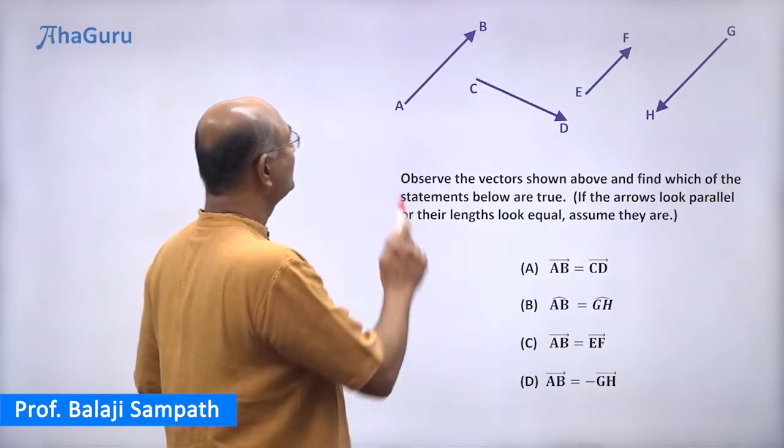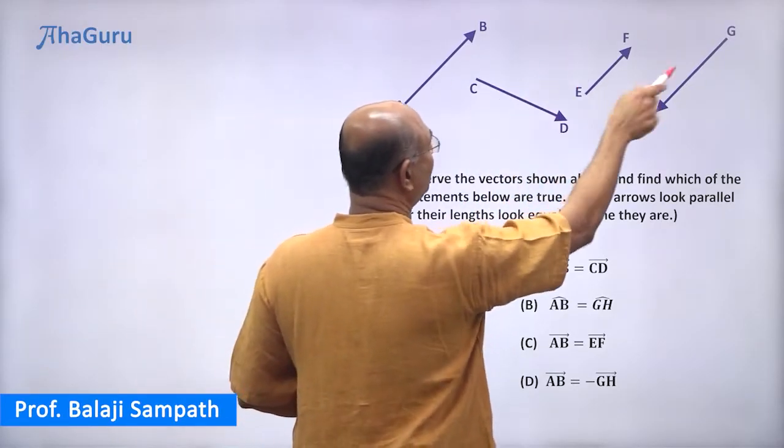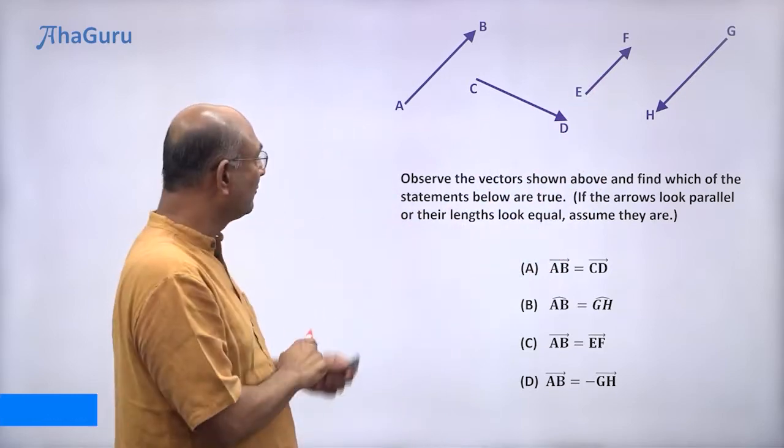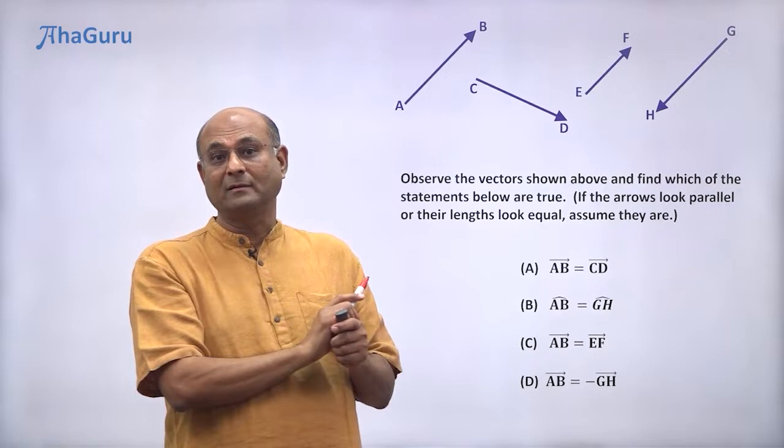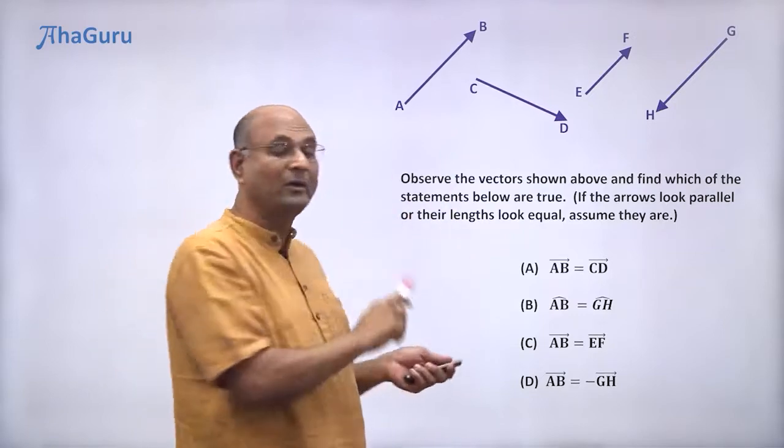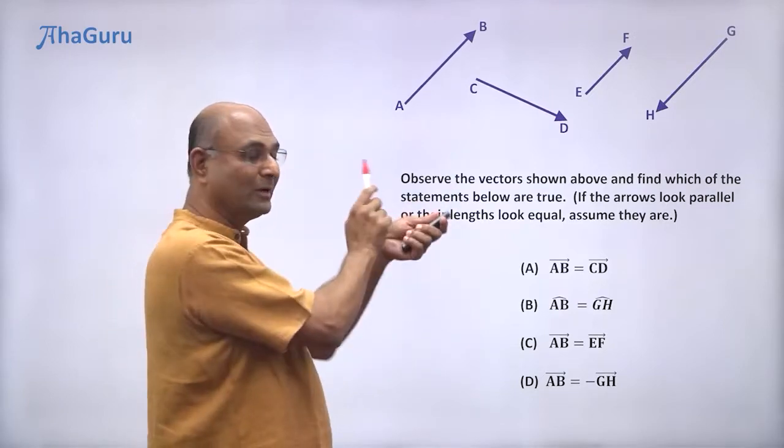Let us now look at this question. We have four arrows, four vectors, and we have been told that if they look parallel, assume they are parallel. If the lengths look equal, assume they are. We don't have to actually match it and see.